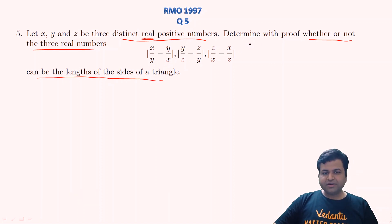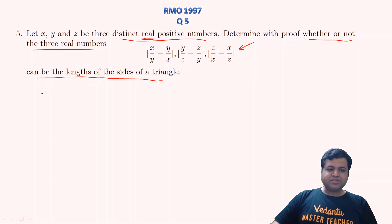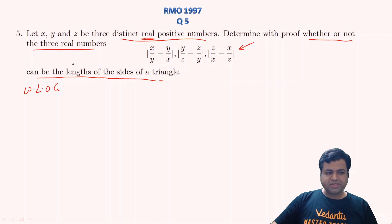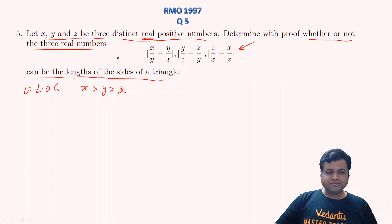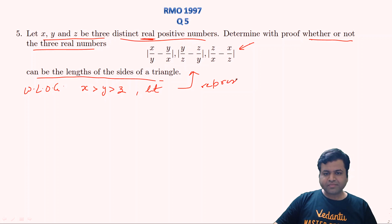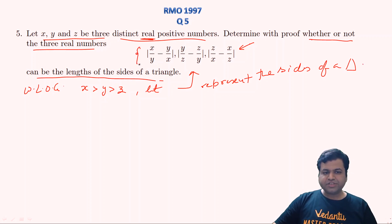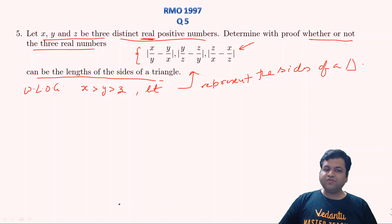So we need to prove whether these will represent the lengths of sides of a triangle or not. Without loss of generality, since these numbers are distinct, one of them will be greatest and one will be smallest. Let's assume x > y > z. We also assume that these three numbers represent the sides of a triangle, and we will try to find out whether they can represent sides or not using contradiction.